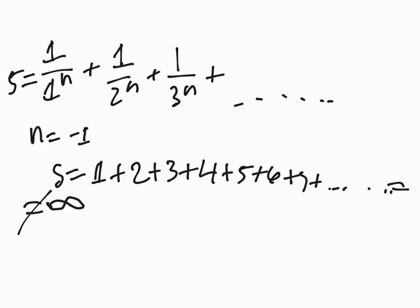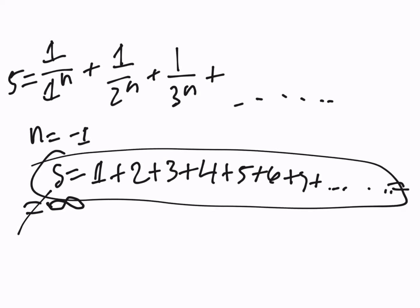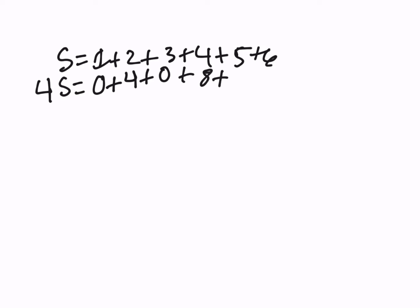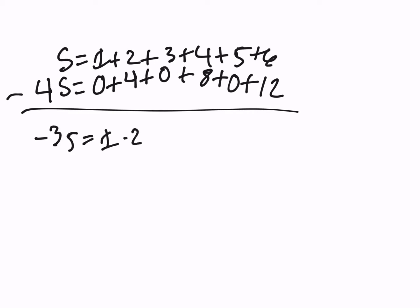To prove that incredible answer, we're going to multiply this equation by 4. So S equals 1 plus 2 plus 3 plus 4 plus 5 plus 6; times this by 4, and we get 4S, but we're going to rearrange it differently with an imaginary zero inserted. So we get 4 plus 0 plus 8 plus 0 plus 12. Then we subtract, and we get negative 3S equal to 1 minus 2 plus 3 minus 4 plus 5 minus 6, and so on. You might think: why did I set this equation up? How is this going to help solve it any better?